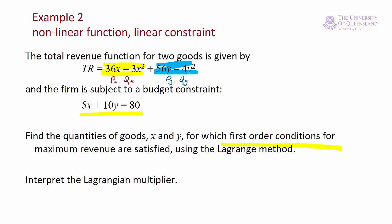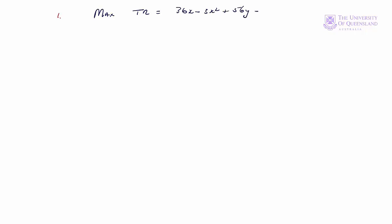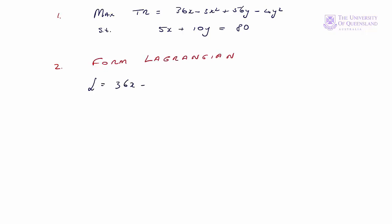We're going to find the first order conditions for a maximum. We can't demonstrate that's a maximum at this stage because we don't have the second order conditions. We'll also solve for lambda and interpret the Lagrange multiplier. The first step is to state the problem in mathematical terms: max total revenue equals 36x minus 3x squared plus 56y minus 4y squared, subject to the constraint 5x plus 10y equals 80. The second step is to form the Lagrangian: L equals 36x minus 3x squared plus 56y minus 4y squared minus lambda times the constraint.